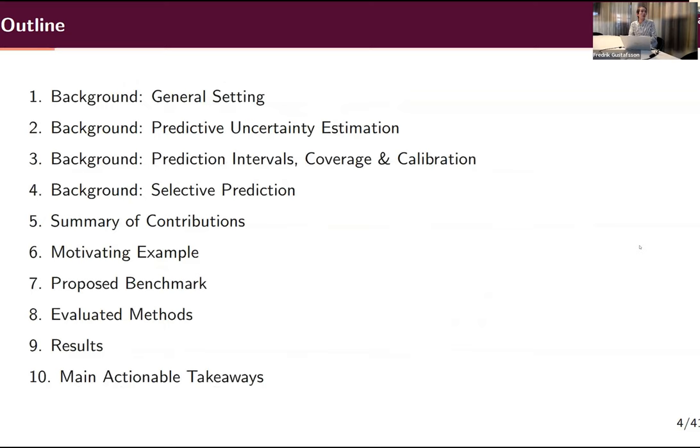The outline covers: first, quite a lot of background on uncertainty estimation for regression and some concepts needed to evaluate methods in the paper; then going through the main things in the paper — the datasets, the methods we evaluate — and then results and takeaways.